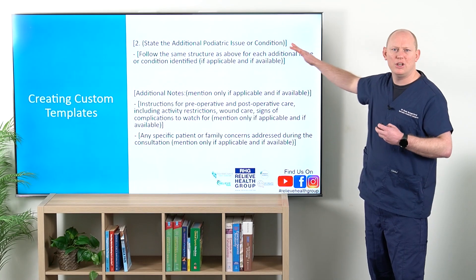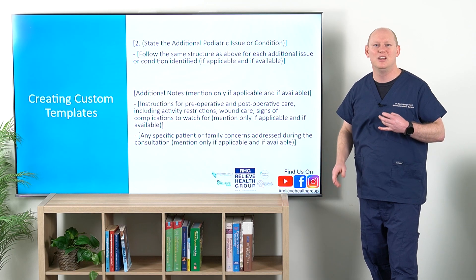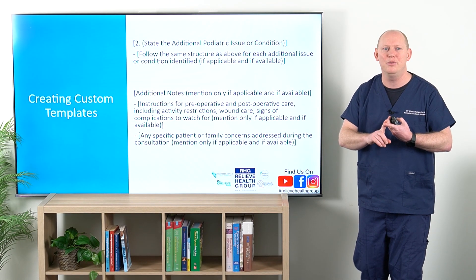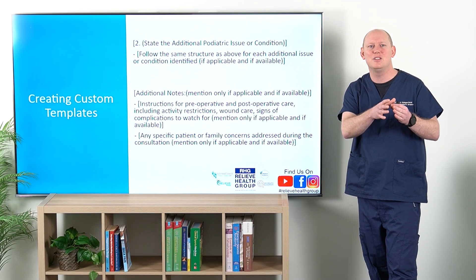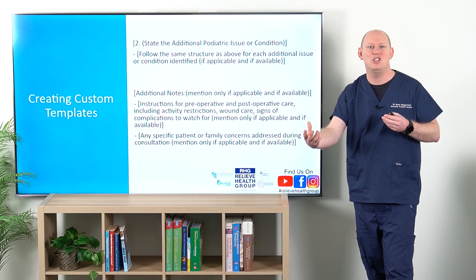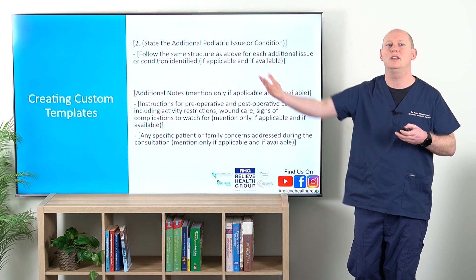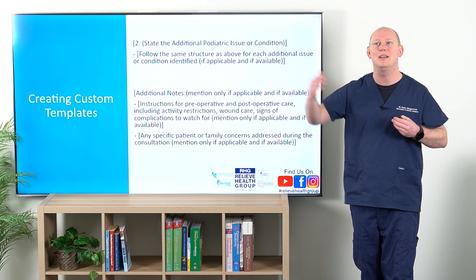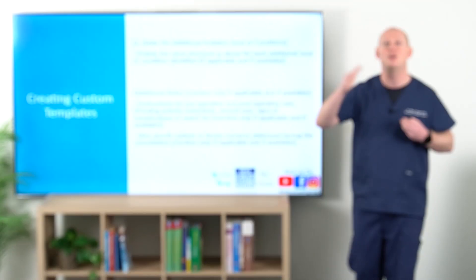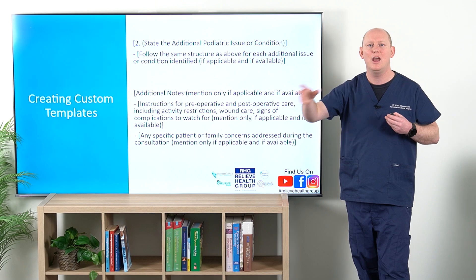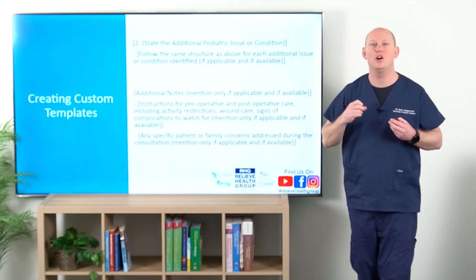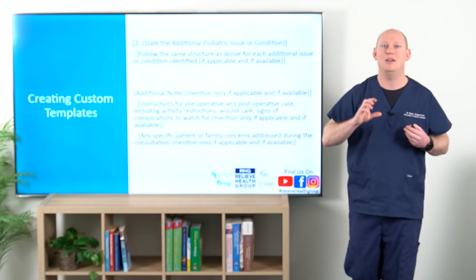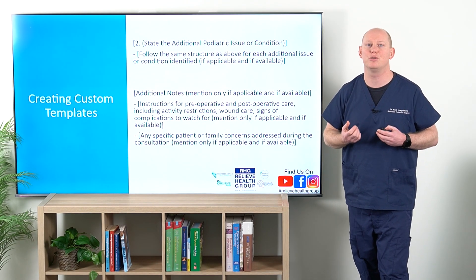Now, if there's more than one concern — I had a patient yesterday that had hammer toes, bunions, heel pain, and Achilles tendinopathy — it sort of grouped them nicely: bunions and hammer toes into one, plantar fasciopathy into one, and the Achilles into another, and it basically went through that format for each. It really meant everything flowed nicely. I knew what we were doing for each one, and I'd verbalized really well in the consult, which means the patient was able to interpret and understand that well.